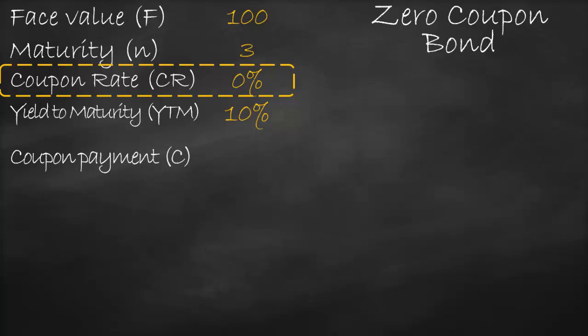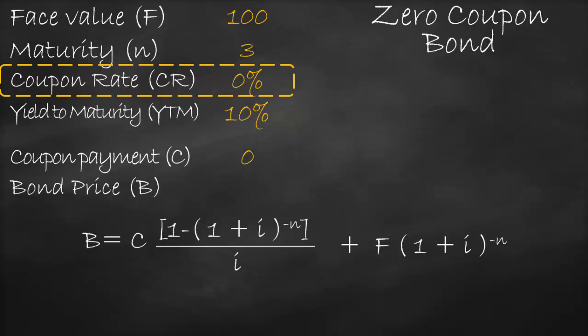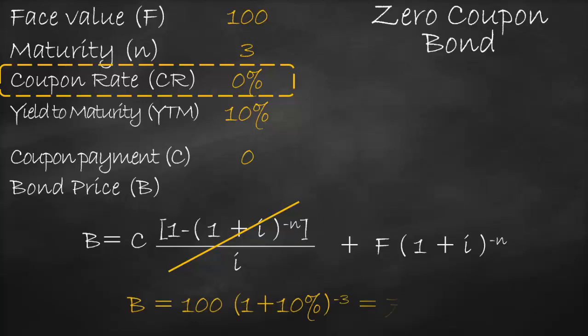The bond price formula is the present value of coupon payments plus the present value of face value. For a zero coupon bond, since the coupon payment is zero, the bond price formula simplifies to: face value multiplied by (1 + i) to the power of negative n. In this example, our bond price will be 100 multiplied by (1 + 10%) to the power of negative three.